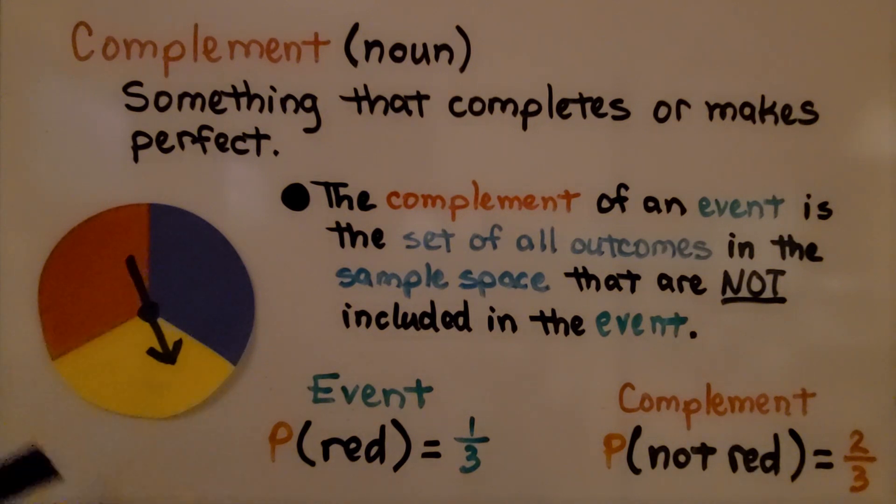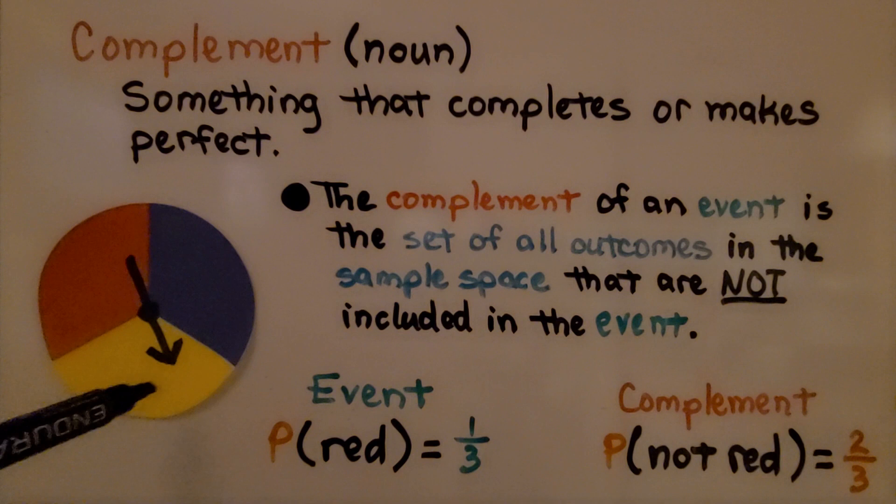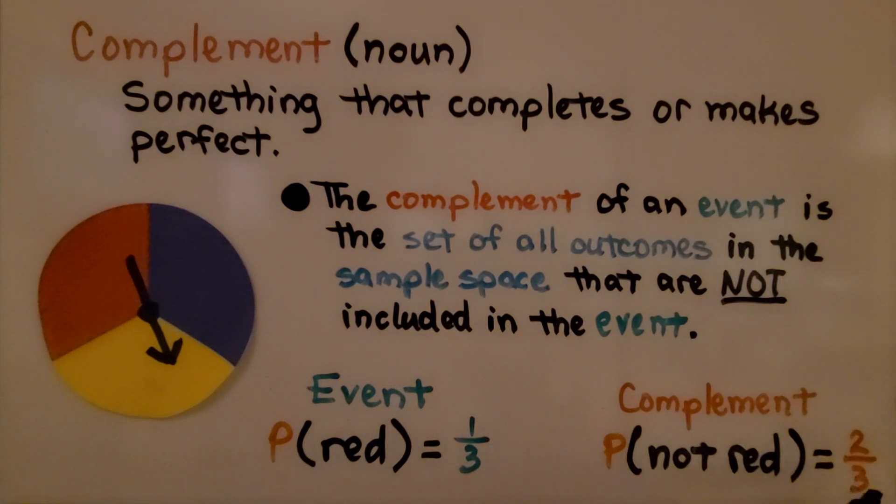If we had a spinner, and our event would be to spin and get red, then we have a one-third chance, because there's three sections, of getting red. The complement of not getting red means we would get a blue or a yellow. That would be two-thirds. It's perfect, because the one-third plus the two-thirds is equal to one whole. The complement completes the event. Together, they make one whole.